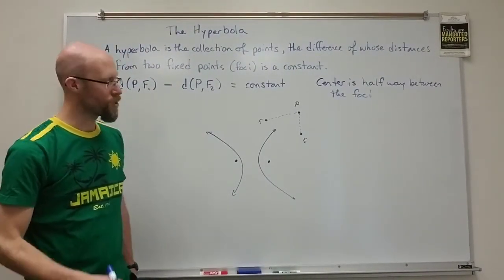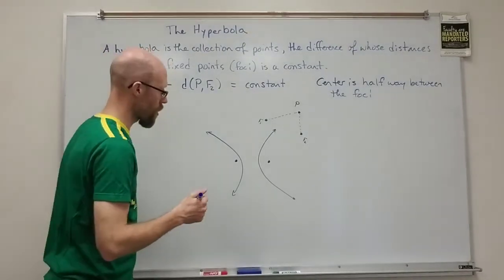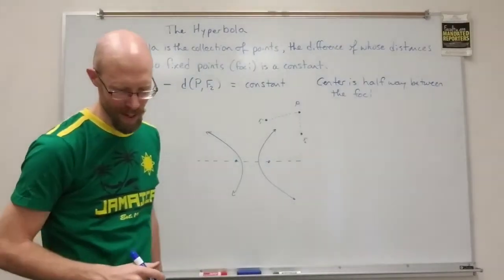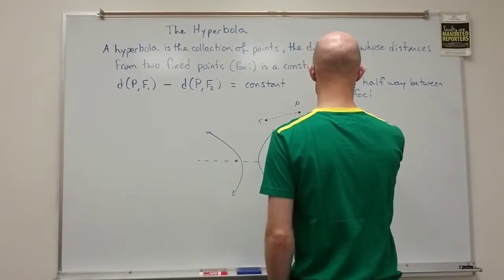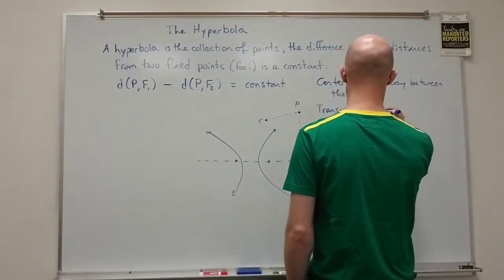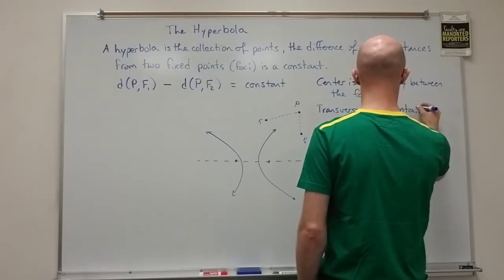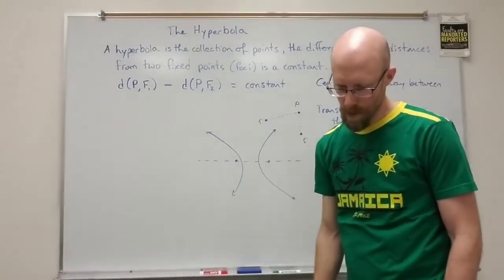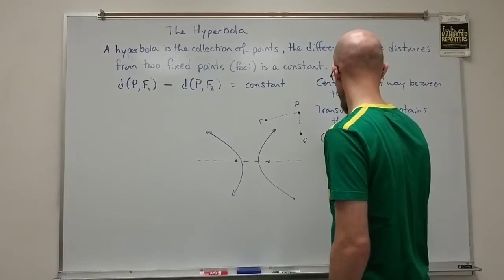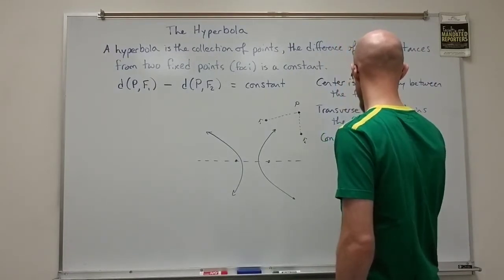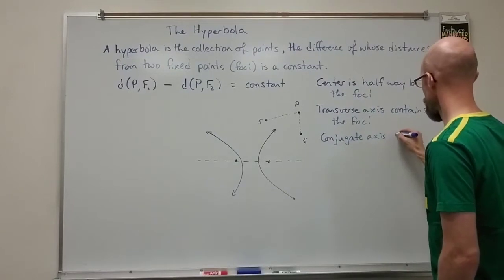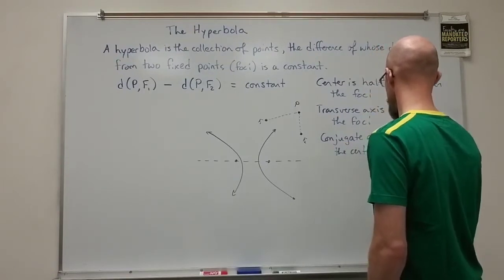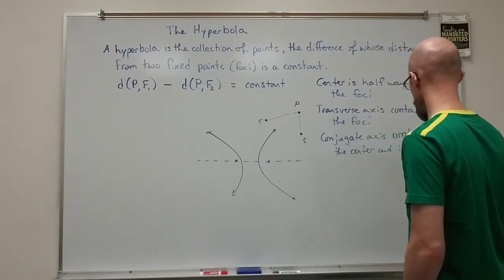Before getting into the actual formula, let me give a few definitions. First, the center is halfway between the foci. We have two main axes: the transverse axis, which contains the foci, and the conjugate axis, which contains the center and is perpendicular to the foci.